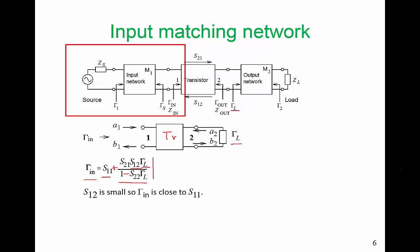Generally, the more expensive the transistor you buy, the smaller S12 will be. And we can get S12 down by using smaller lithography.